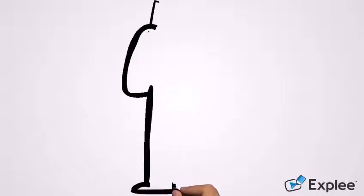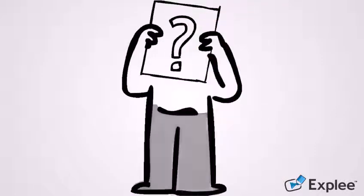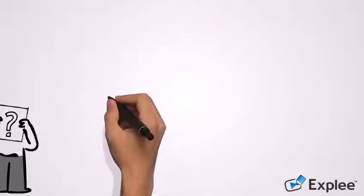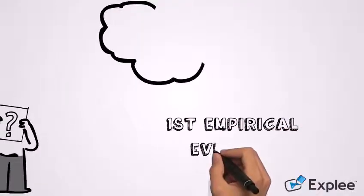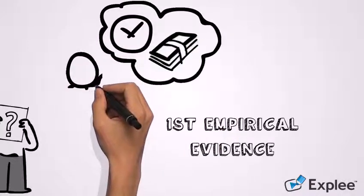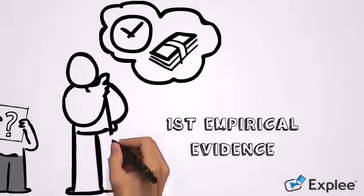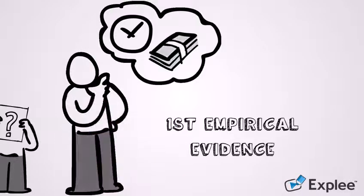But this was just an assumption, and here comes the role of the study we are discussing today. The aim of the study was to provide the first empirical evidence that using watches with the time setting resembling a smiling face, like 10 past 10, would positively affect consumers.